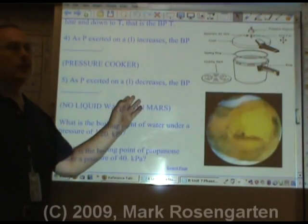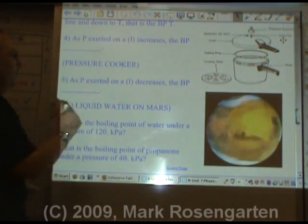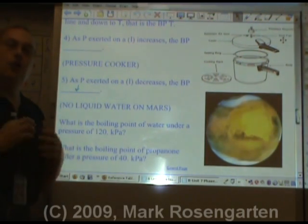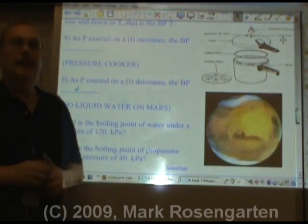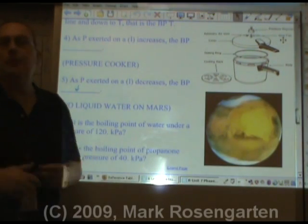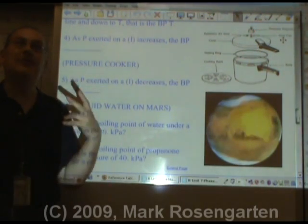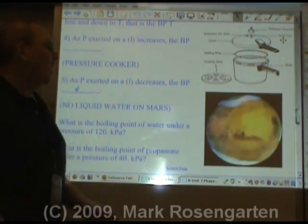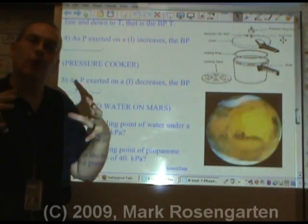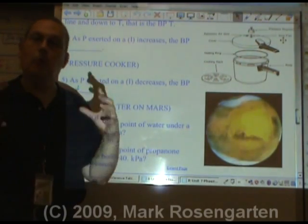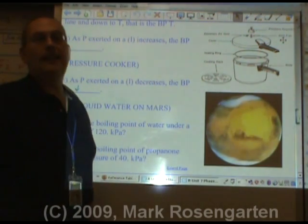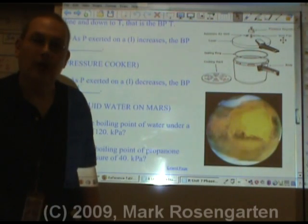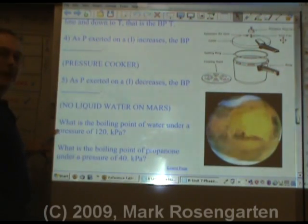On the other hand, as the pressure exerted on a liquid decreases, the boiling point decreases. This is why there's no liquid water on the surface of Mars. Mars has an atmospheric pressure of between about 2 and 3 kilopascals — about 2% of Earth's atmospheric pressure. There isn't enough pressure to keep water a liquid, so the second it gets warm enough for water to turn from ice to a liquid, it immediately boils off as a gas. You will not find liquid water on Mars — water there behaves like dry ice.